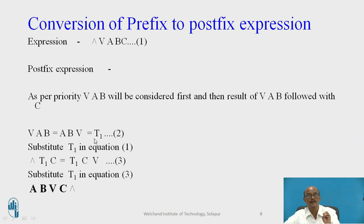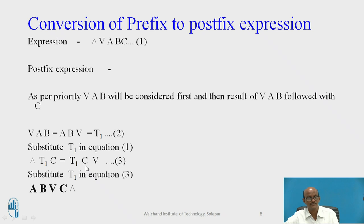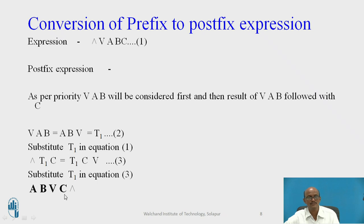Substitute T1 back into equation number one. In place of OR A B, put T1, so the expression becomes AND T1 C. Convert AND T1 C into postfix: that gives T1 C AND — equation number three. Now substitute the value of T1, which is A B OR, into equation number three. The final postfix expression is A B OR C AND.